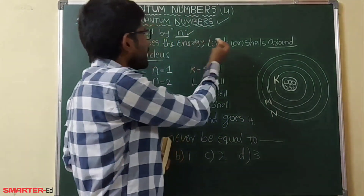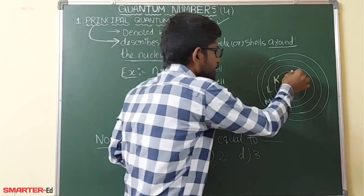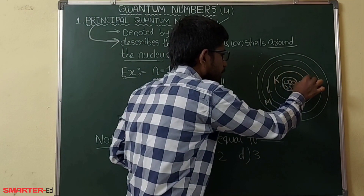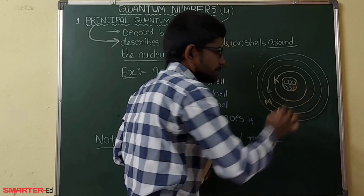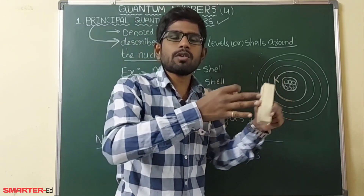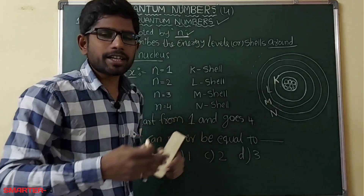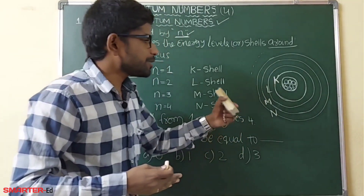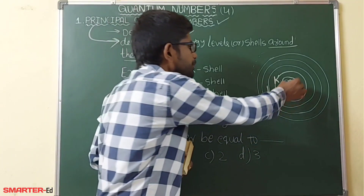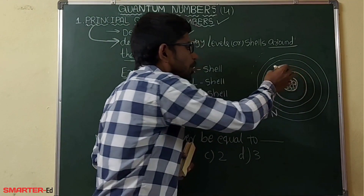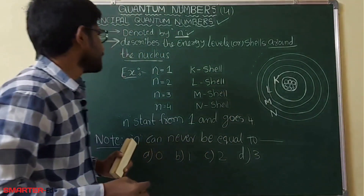The electrons are revolving around the nucleus in a particular path. Electrons have negative charge, protons have positive charge, and neutrons have no charge. Now we will see what those shells are.